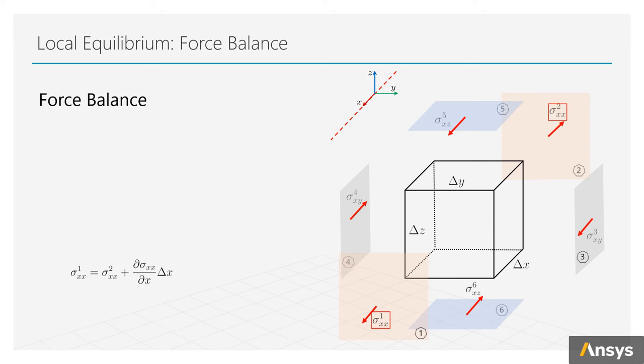On surface 3 and 4, there are forces on x direction from sigma xy. On surface 5 and 6, there are forces on x direction from sigma xz. Note that the first index of the stress components tells us the direction of the stress components. Besides, we also need to include the body force in x direction here.